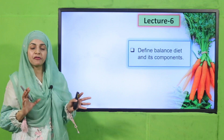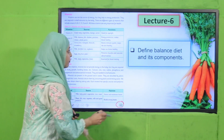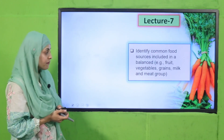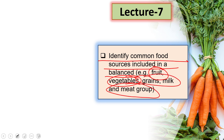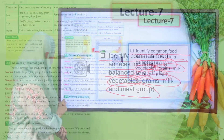In Lecture Number Seven, students will be able to identify common food sources included in a balanced diet, such as fruits, vegetables, grains, milk, and meat. The page that will be under reading is page number 46.